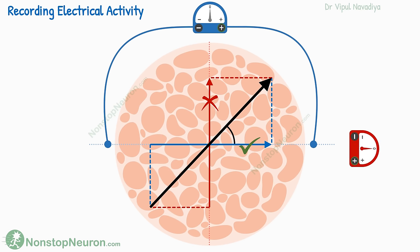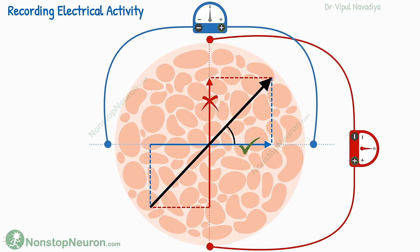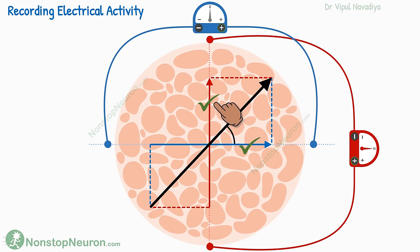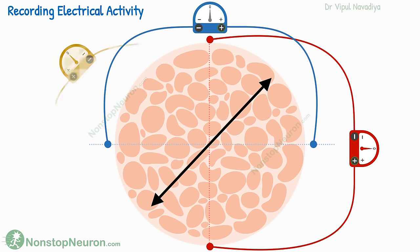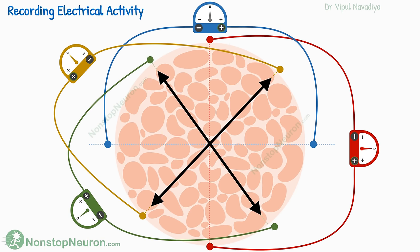To solve this problem, we can use one more electrical meter. If we place its electrodes perpendicular to the previous one, now we can record the perpendicular component as well. By using two electrical meters, we can measure all the currents in the plane. The horizontal electrodes measure the projection on the horizontal axis, and the vertical electrodes record the projection on the vertical axis. By combining the two, we can interpret the overall direction. Two meters are enough to map all currents in a plane, but we can use more for better recording — a current in any specific direction is best recorded by electrodes placed parallel to it.